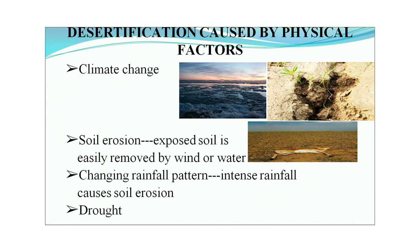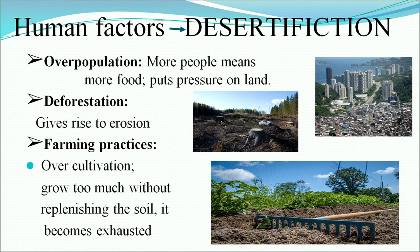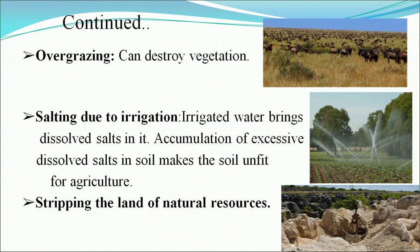Desertification due to physical factors: climate change causes soil erosion, and exposed soil is easily removed by wind or water. Changing rainfall patterns — either intense rain or lack of rain — damage the soil, as does drought. Human factors: overpopulation means more food and more pressure on land, leading to deforestation and erosion. New farming practices, over-cultivation without replenishing the soil, and over-grazing all contribute. Over-grazing can destroy vegetation.